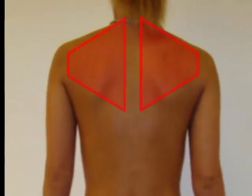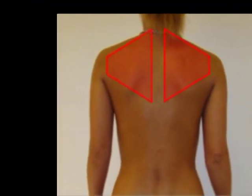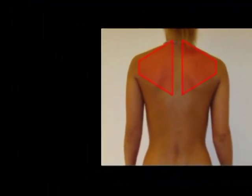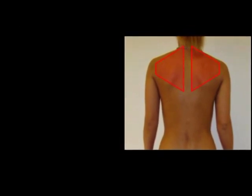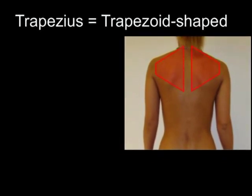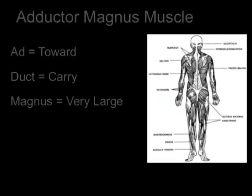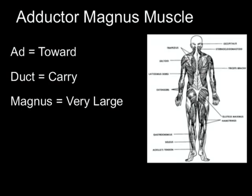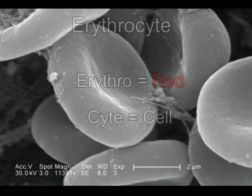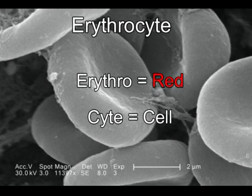We all have two trapezius muscles in our backs, connecting our spine to our shoulders. Trapezius means trapezoid — shaped like a rectangle with two parallel sides and two non-parallel sides. Each leg has an adductor magnus muscle connecting the thigh bone to the pelvis — add means toward, duct means to carry, and magnus means very large. Erythrocyte is a red blood cell — erythro means red in color and cyte means cell.